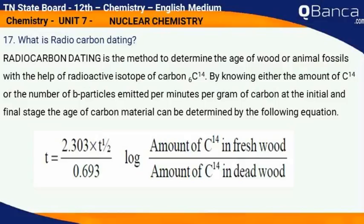the age of carbon material can be determined by the following equation: t equals 2.303 times t-half divided by 0.693, log of amount of C-14 in fresh wood divided by amount of C-14 in dead wood.